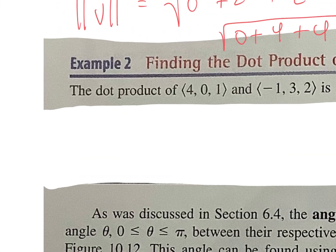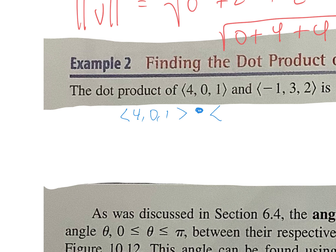Dot product. Here are my two vectors that we're talking about. I have 4, 0, and 1. Remember, the dot product does not mean multiply. It's negative 1, 3, and 2. Your dot product is going to be one singular value. So you're going to take first times first. So 4 times negative 1. Plus second times second. So 0 times 3 plus third times third. So 1 times 2.